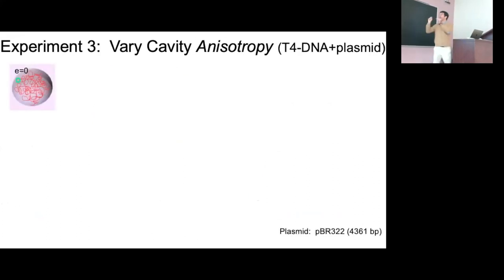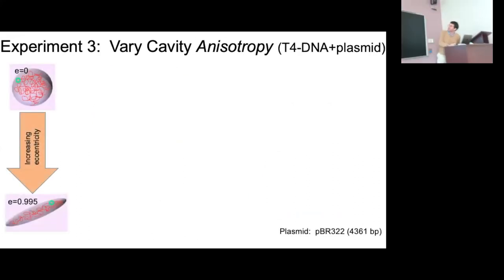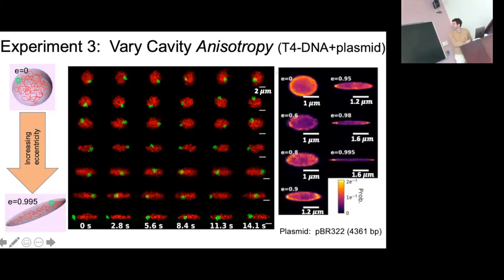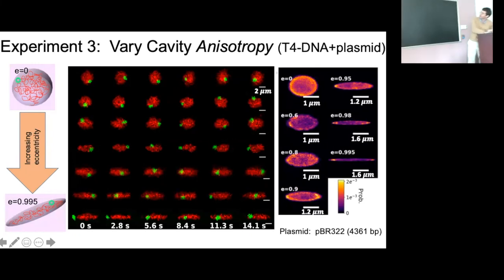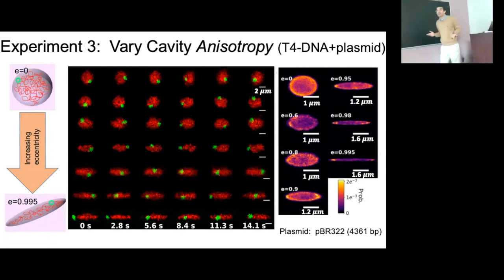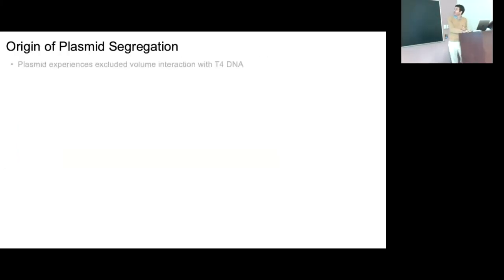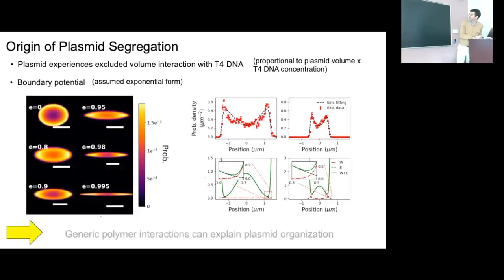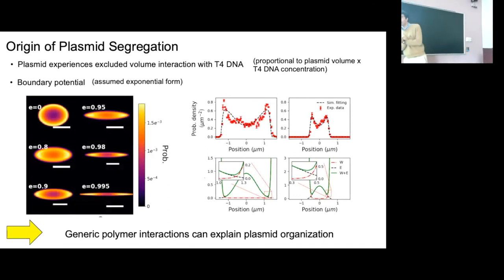Things get really interesting when I add a plasmid. The plasmid sits on the edge, excluded by the big molecule, and seems to like to hang out at the poles as the cavity gets elongated. A histogram of plasmid position shows a ring pattern — reminiscent of the in-vivo system — but this is a trivial system containing just one large DNA and a plasmid. We developed a little theory: you have a boundary potential and a depletion volume potential, and competition between those two creates a pocket at the edge, suggesting generic polar interactions might explain this non-trivial biological observation.